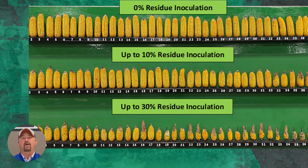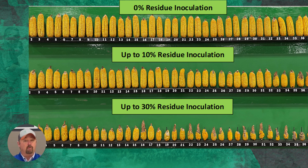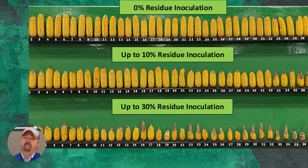That means yield is going down. Worse yet, we go up to a 30% residue inoculation and you can really see even some barren ears — almost barren ears here. Significant yield losses. So again it just goes to show you how important it is to make sure we know how much residue is in the furrow, so we can go after and attack it and make sure we've got a clean furrow and don't lose corn yield.